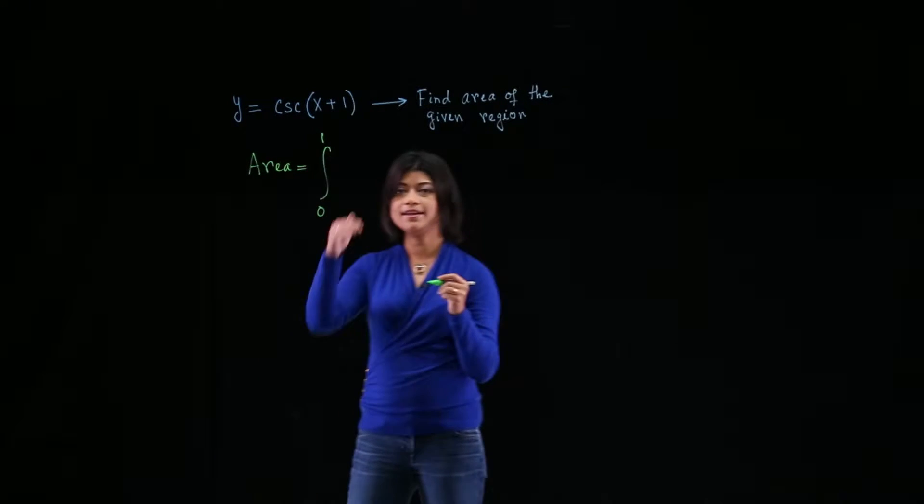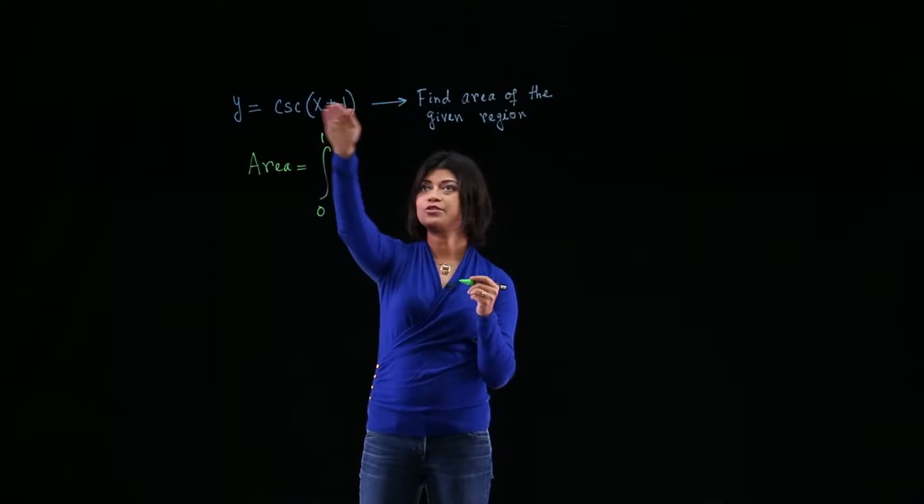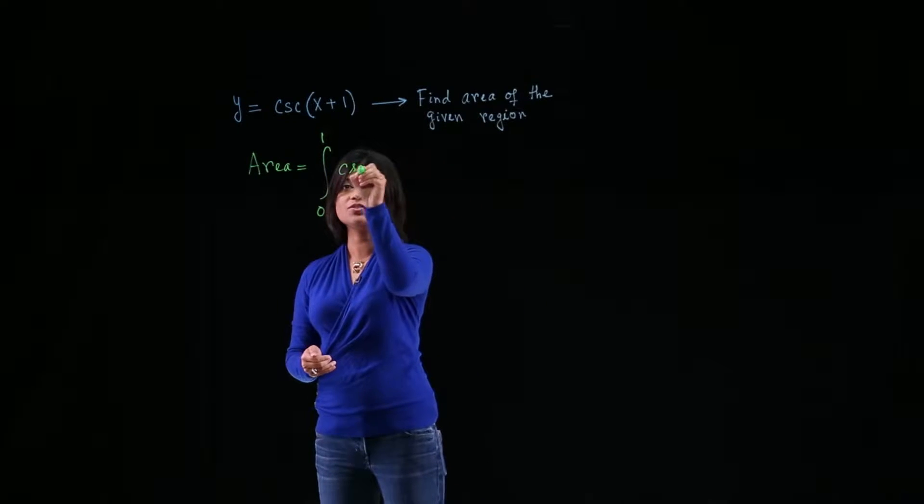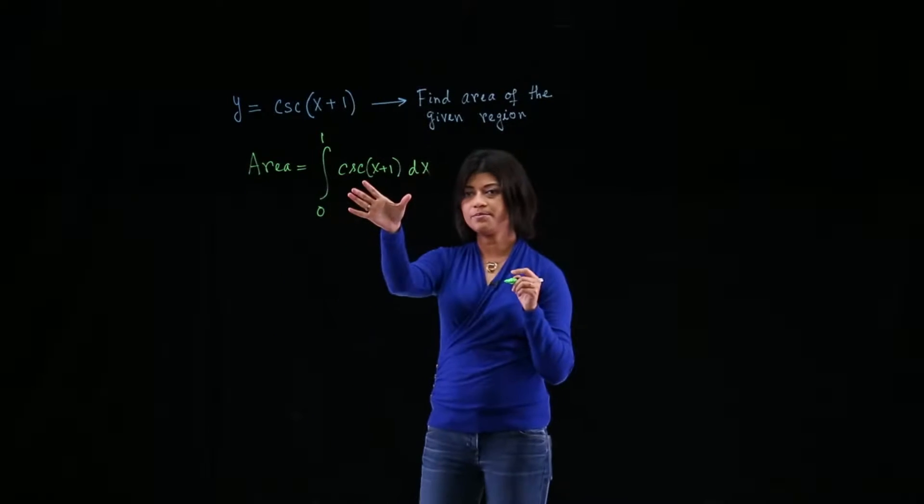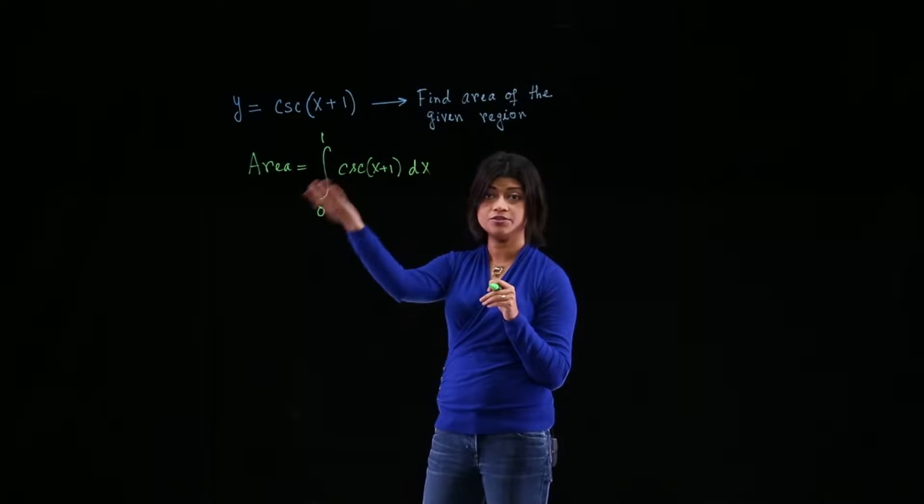So it's between 0 and 1. And you just have to write down the function here, of cosecant of x plus 1 dx. So this is the setup to compute the area of the region.